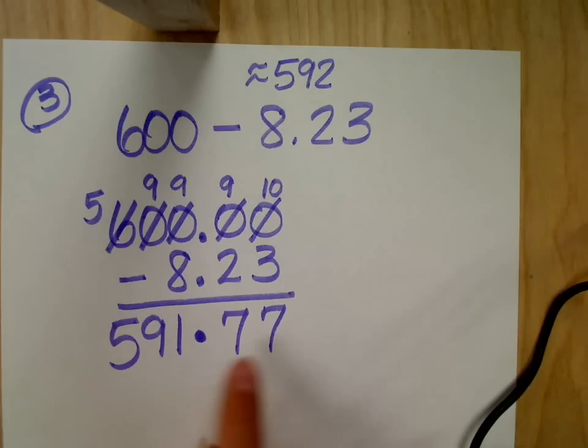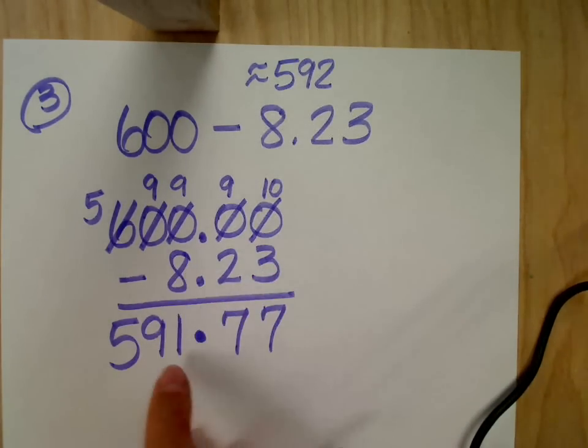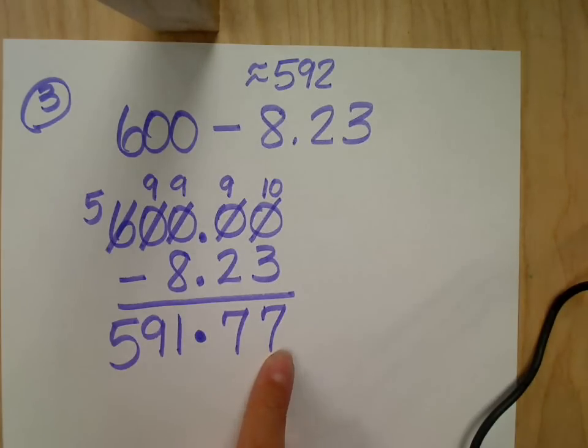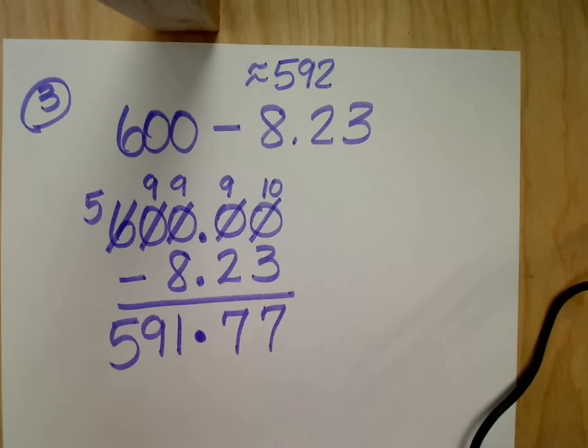So, we can double check by adding 7 and 3, 7 and 2 carry the 1, 8 and 1 is going to be 10 and 9. So, I end up getting 600 if I were to add these two together. And if you don't believe me, go ahead and check it.